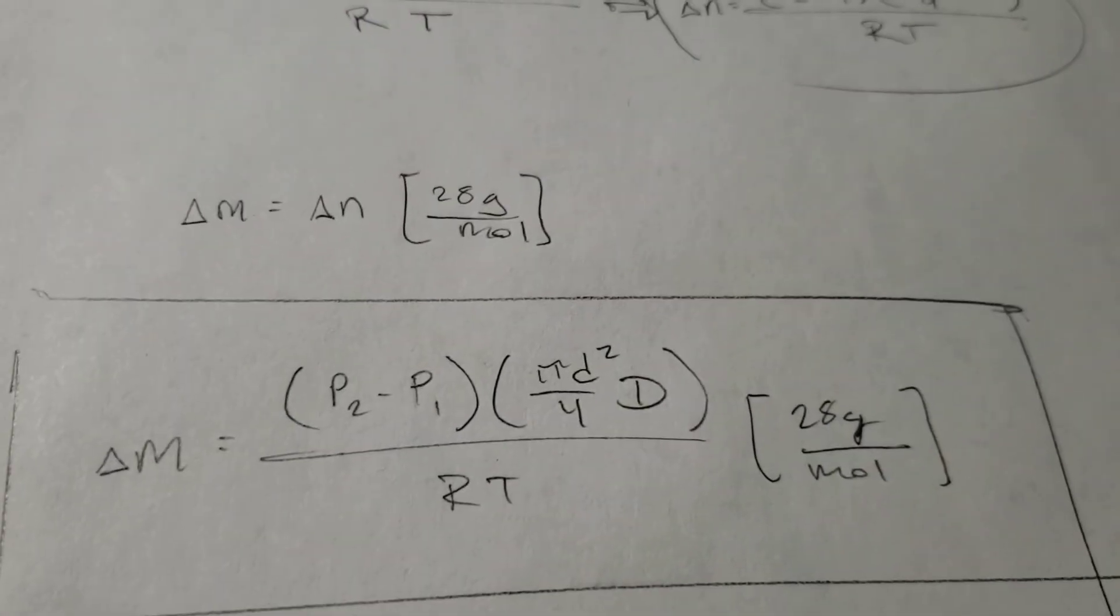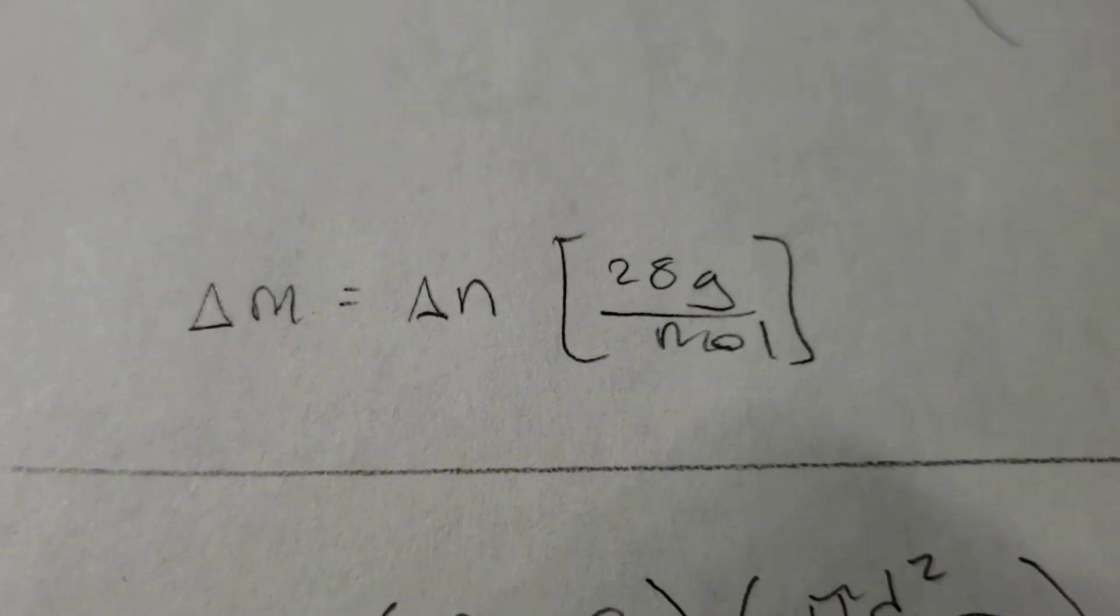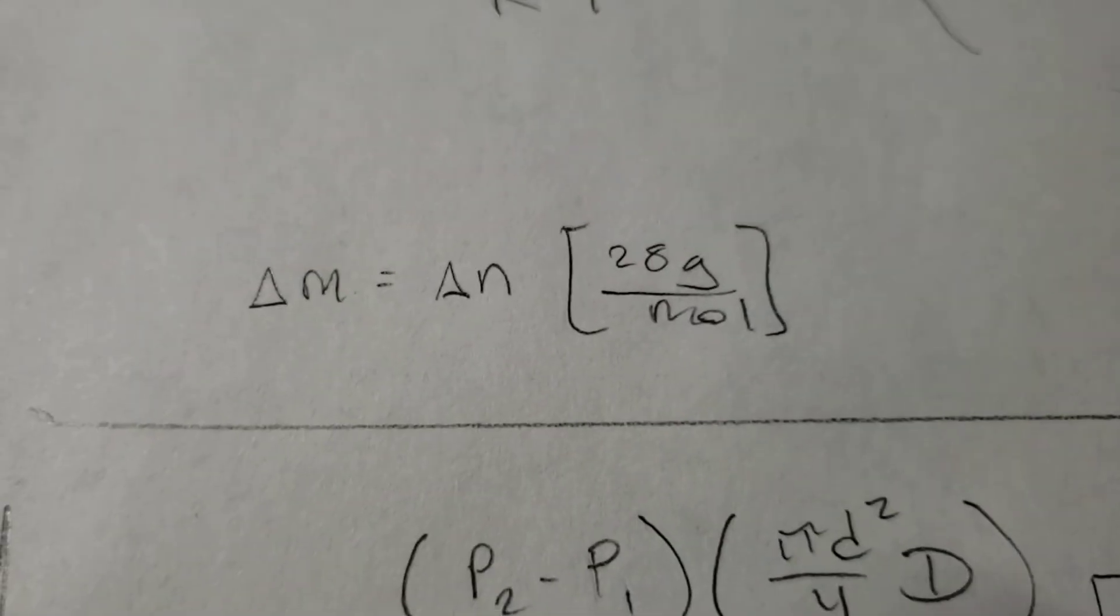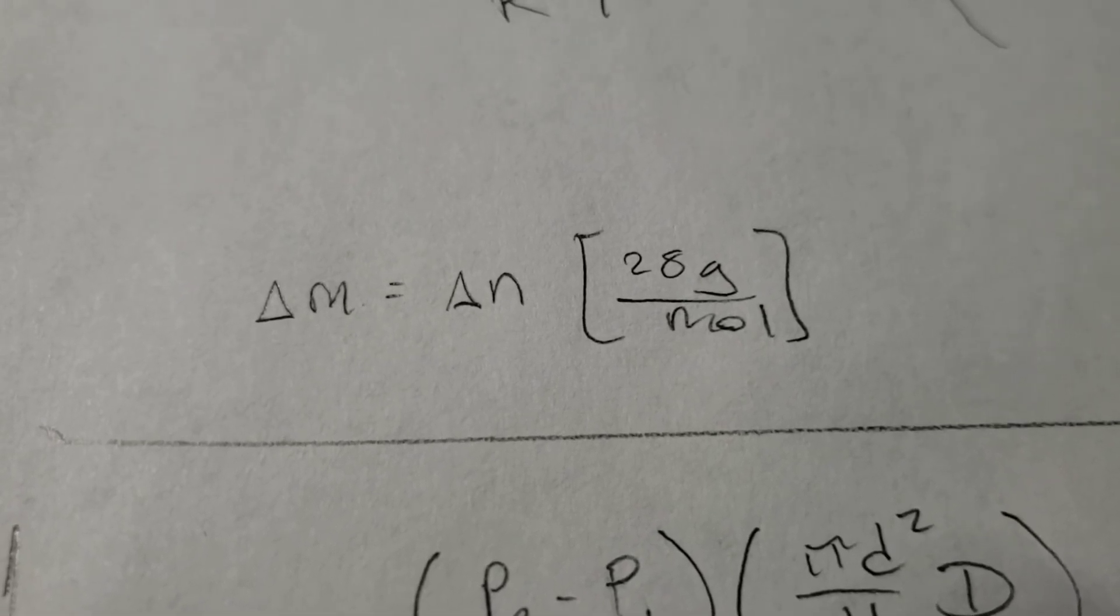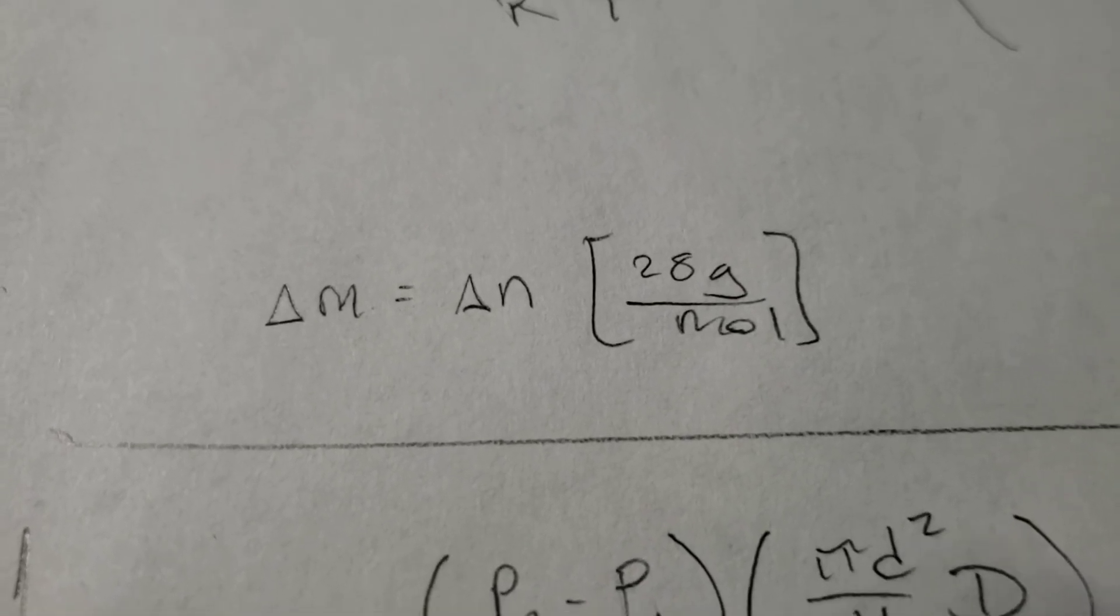So, adding that conversion into the answer using this formula, a relationship, we know that the change in mass will be equal to the change in moles times the molar mass of nitrogen, which is 28 grams per mole.